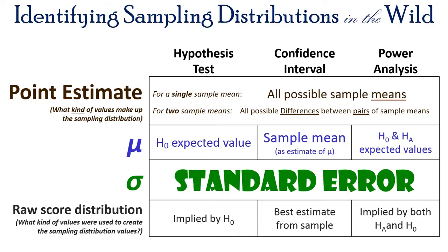We can put this into a summary chart. One row tells you what the point estimate is, one tells you what the mean of the sampling distribution is, one tells you what the standard deviation of the sampling distribution is, and one tells you what the raw score distribution was imagined to be. For a single sample mean, all possible sample means. For two sample means, there are no barriers — for hypothesis tests, confidence intervals, or power analysis, it's always the standard error. The differences are the mean and what raw score distribution we imagine they came from.